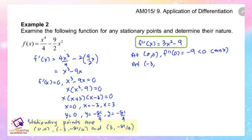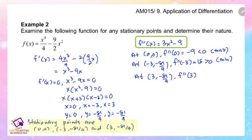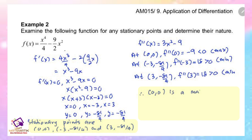At (negative 3, negative 81 over 4), the second derivative value is 18, which is greater than 0, so it is a minimum. At the last point (3, negative 81 over 4), f double prime is also 18. Therefore, (0, 0) is a maximum point, and (negative 3, negative 81 over 4) and (3, negative 81 over 4) are minimum points.